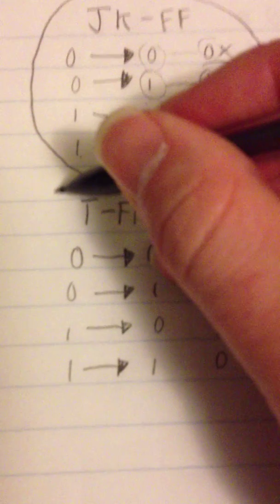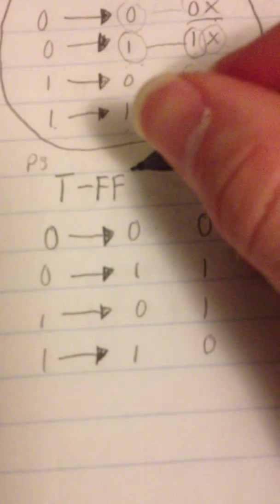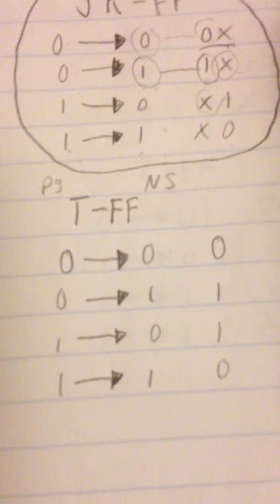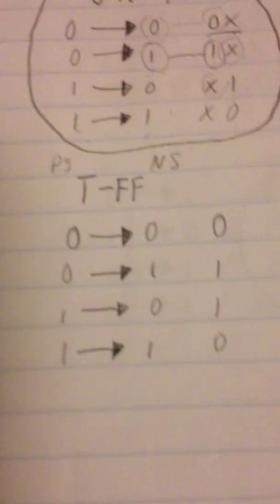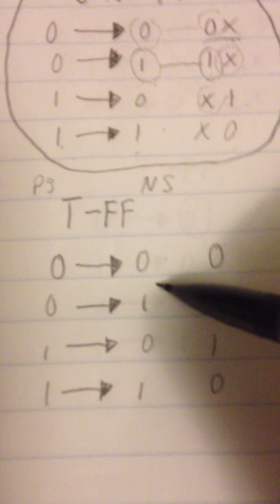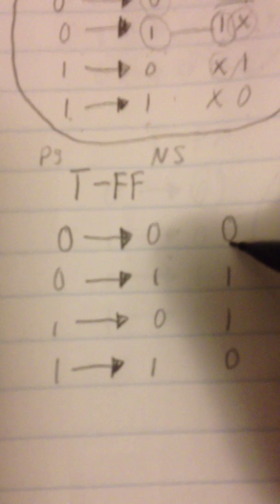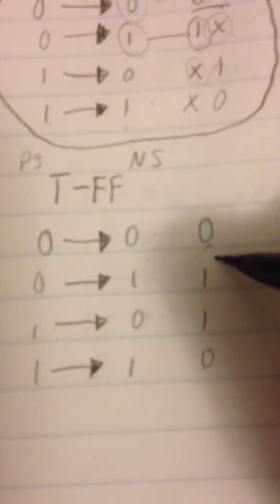So then you look at the T flip-flop right here. This is again present state and then next state. You've got zero to zero right here, which always stays the same. If the digits are the same for the T flip-flop, then they stay the same — so the same two digits produce zero at all times. If the digits are the same, it produces a zero. So you look here: one, one — and that produces a zero.